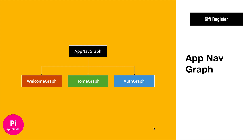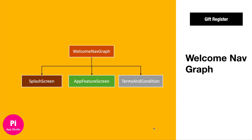One is the home nav graph, the welcome nav graph, and the auth nav graph. In the welcome nav graph, we have three different pages: one is the splash screen, app feature screen, and terms and conditions screen.